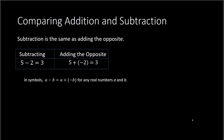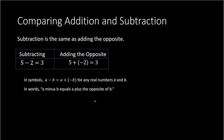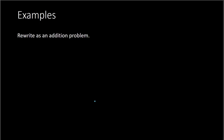In math notation, we can say that a minus b equals a plus negative b, for any real numbers a and b. In words: a minus b equals a plus the opposite of b.